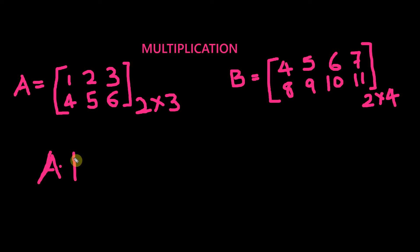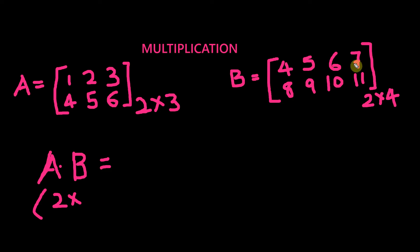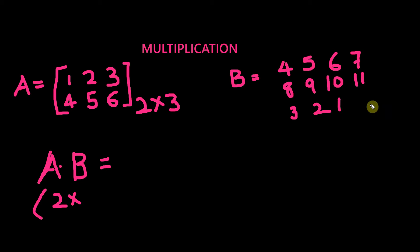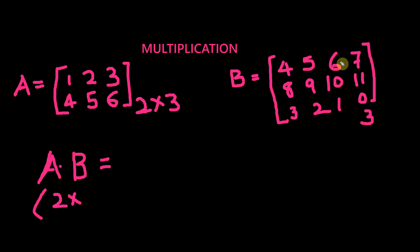Let's see if we can multiply A with B. Can we? No. Why? Because it's not following the multiplication rule. The number of columns in the first matrix should be equal to the number of rows in the second matrix which you're trying to multiply. So let's add one more row here, making matrix B a 3 by 4 matrix.